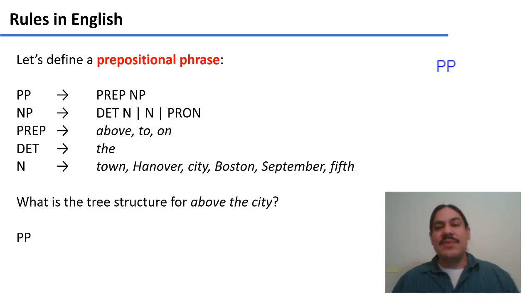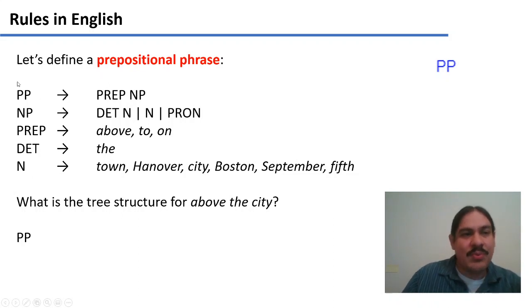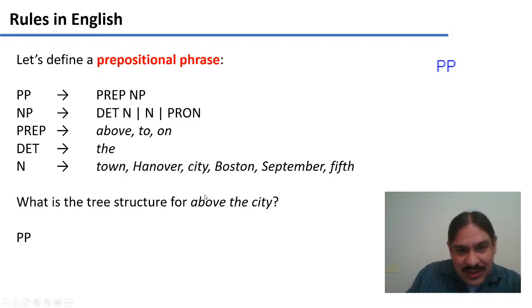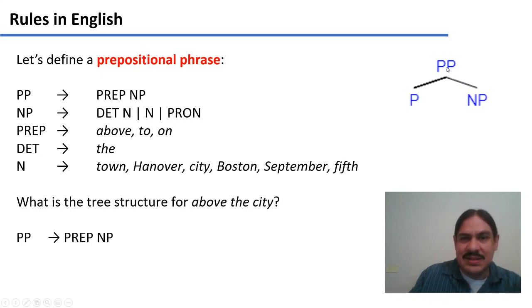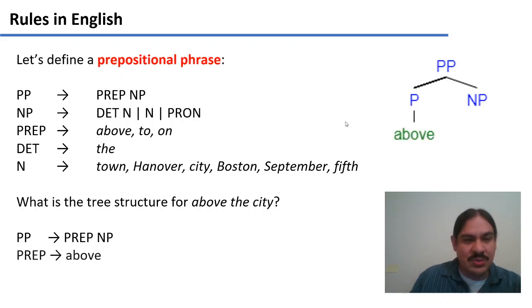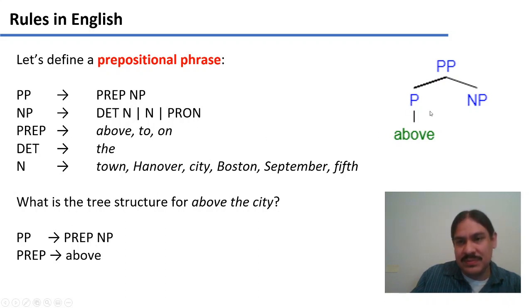Let's check it out. The first thing you would need to do, because we know this is a prepositional phrase, is start with a prepositional phrase. The second thing is to know that 'above' is a preposition and 'the city' is a determiner and a noun. The one structure we have that is a determiner and a noun is a noun phrase. So we need to go from prepositional phrase to preposition and noun phrase. Then we replace the non-terminal preposition with one of our actual terminals — for example, 'above.'